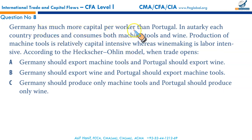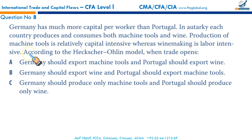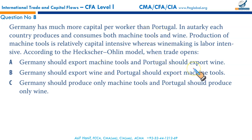Germany has much more capital per worker than Portugal, making Germany capital intensive. In autarky, each country produces and consumes both machine tools and wine. Production of machine tools is relatively capital intensive, for which Germany is better suited, whereas wine making is labor intensive, for which Portugal is better suited. According to the Heckscher-Ohlin model, when trade opens, Germany should export machine tools because it has more capital per worker, and Portugal should export wine. A country has a comparative advantage in goods whose production is intensive in factors with which it has relative abundance — that makes A the correct option.